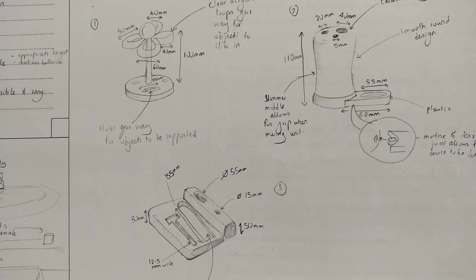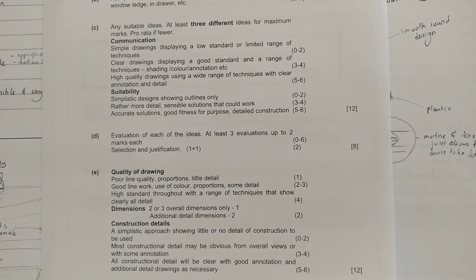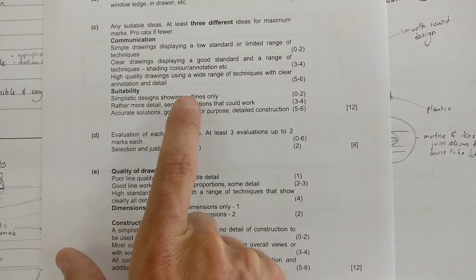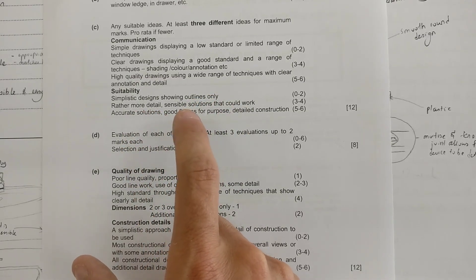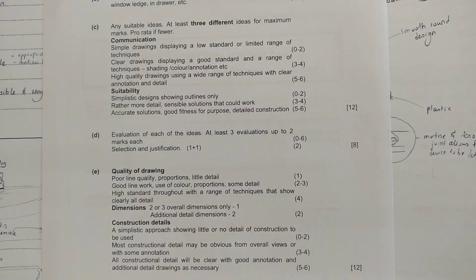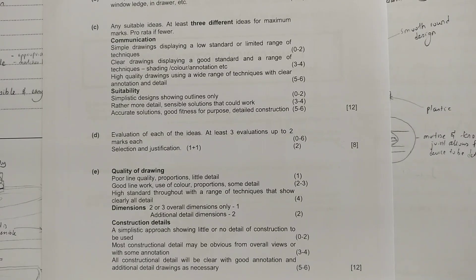The second section of the mark scheme for question C talks about whether your designs are fit for purpose: simplistic ideas showing only outlines for two marks; a bit more detail and sensible ideas for four marks; or accurate solutions that are fit for purpose with detailed construction for the top marks. You need to think about how the products go together and their sizes, and make sure it makes sense to the examiner. This question is split into two sections of six marks each — at least three designs, detailed, showing construction methods, a range of techniques, and all ideas fit for purpose.